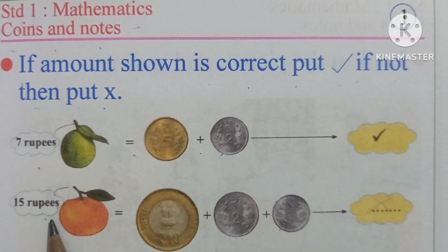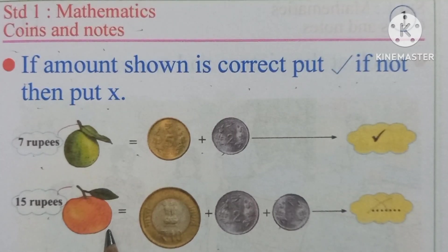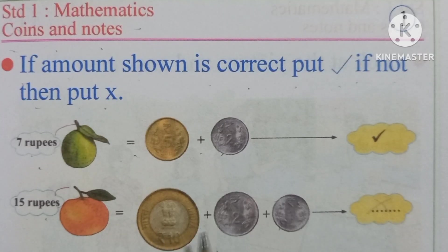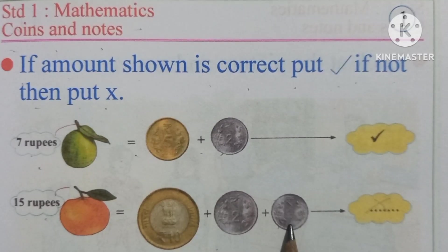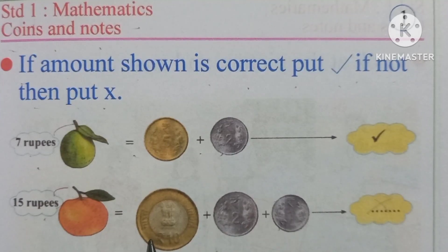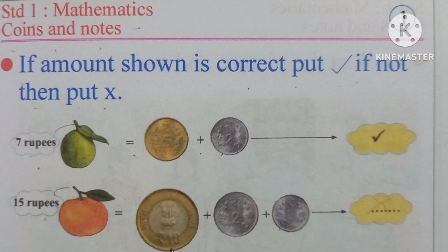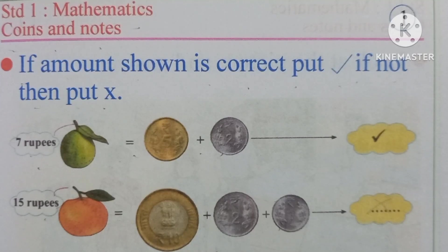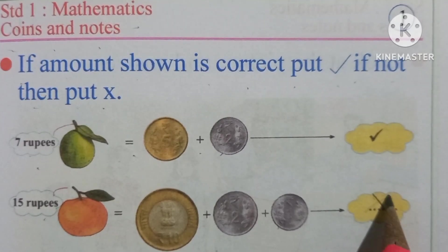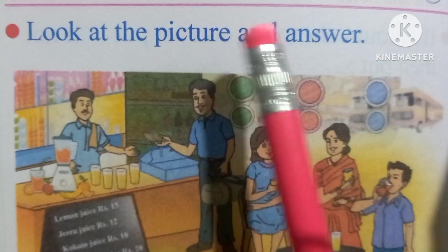Now, the price of this fruit is 15 rupees, shown as a coin of 10 rupees plus a coin of 2 rupees plus a coin of 1 rupee. Addition of these 3 coins is 10 plus 2 plus 1, which equals 13. This addition is wrong, so we put the wrong sign.